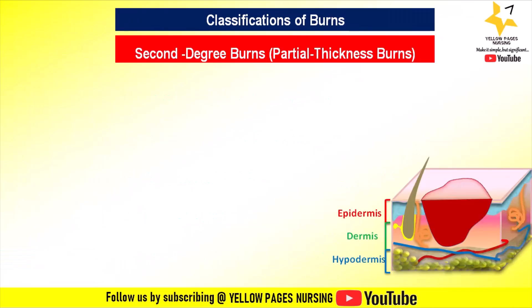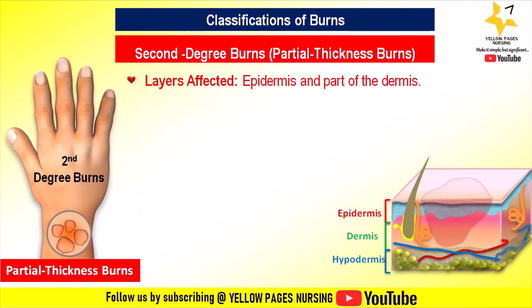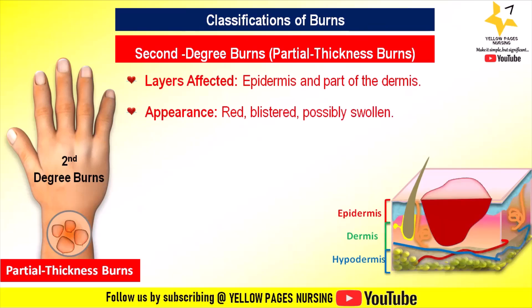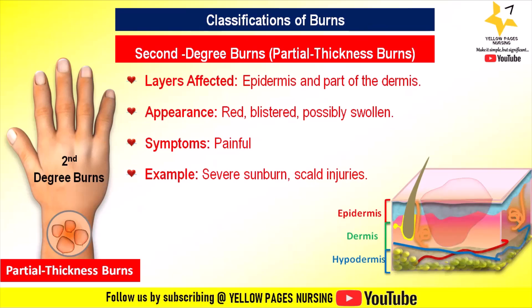Second degree burns are otherwise called partial thickness burns. The layers affected are the epidermis and part of the dermis. They appear red, blistered, and possibly swollen. Symptomatically they are also painful. Examples include severe sunburn and scald injuries — burns caused by hot liquids or steam — which happen when skin contacts boiling water, hot drinks, steam, or hot bath water, damaging the skin and tissues underneath.